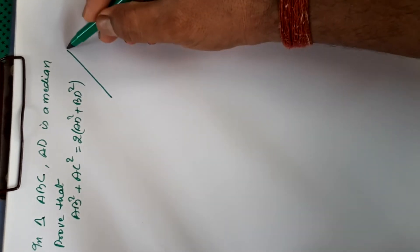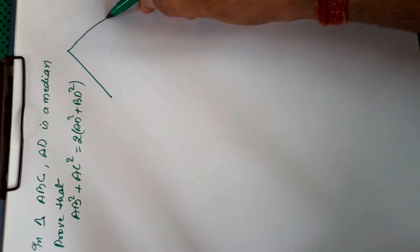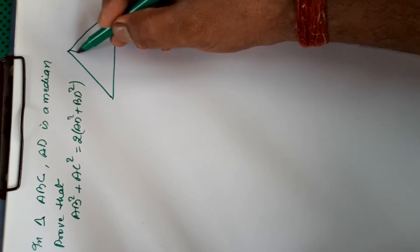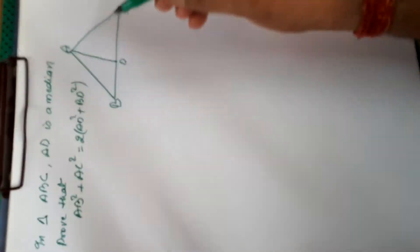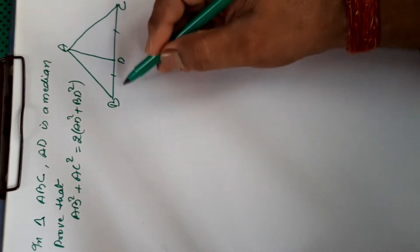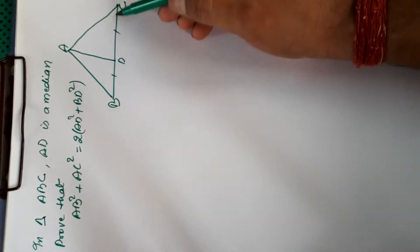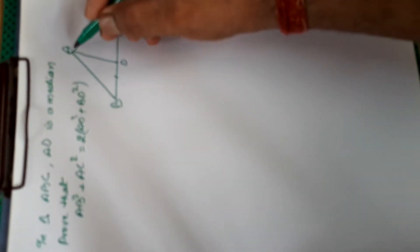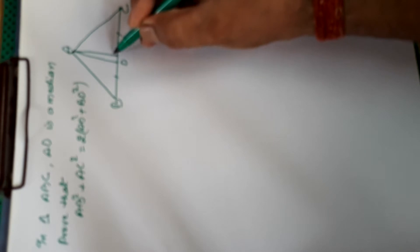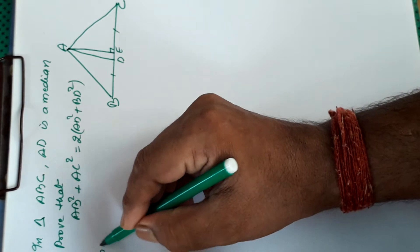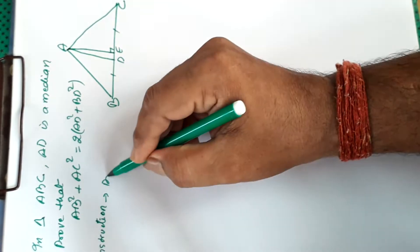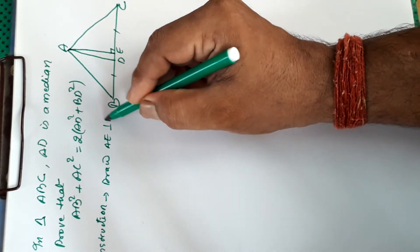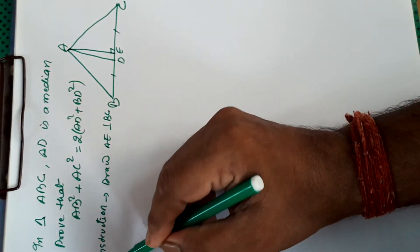The figure is like this. AD is a median, which means D is the midpoint of BC, so BD is equal to DC. For this we will draw a perpendicular here — let it be E. Construction: draw AE perpendicular to BC. Now we will prove.